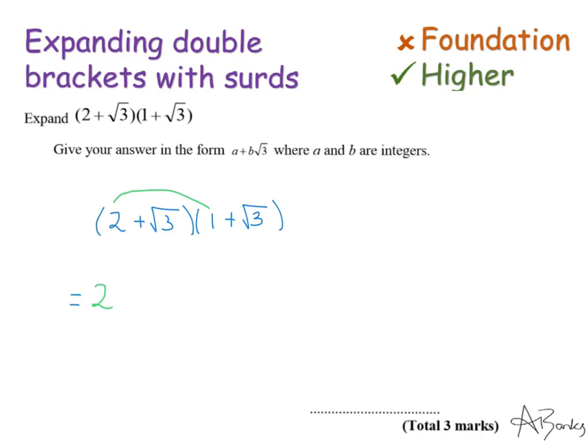Then I'm going to do two multiplied by root three, which is two root three. Then we're going to do root three times one, which is just one root three or just root three. And then finally root three times root three is three.